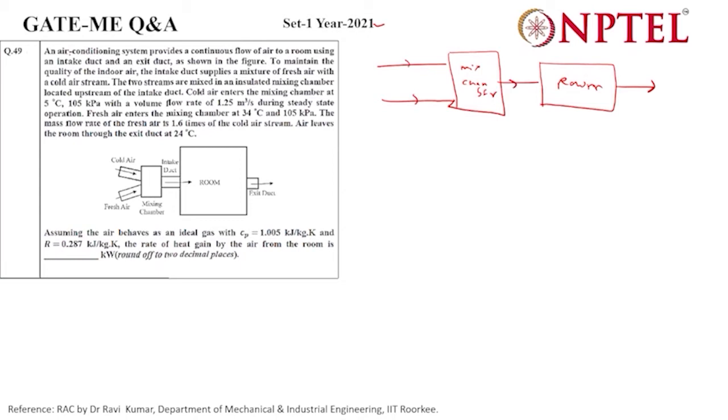Now we'll read the problem. An air conditioning system provides continuous flow of air from an intake duct and exit duct as shown in the figure to maintain the quality of indoor air. The intake duct supplies a mixture of fresh air with a cold stream of air. The two streams are mixed in an insulated mixing chamber. Here the insulated mixing chamber is insulated.